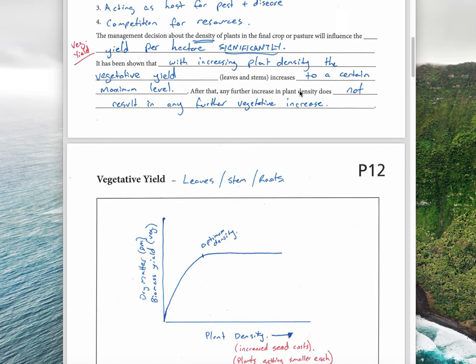With vegetative yield, the management decision about the density of plants in the final crop will influence the yield per hectare significantly. With increasing plant density, the vegetative yield, or leaves and stems, increases to a certain maximum level, also known as optimum density. After that, any further increase in plant density does not result in any further vegetative increase.